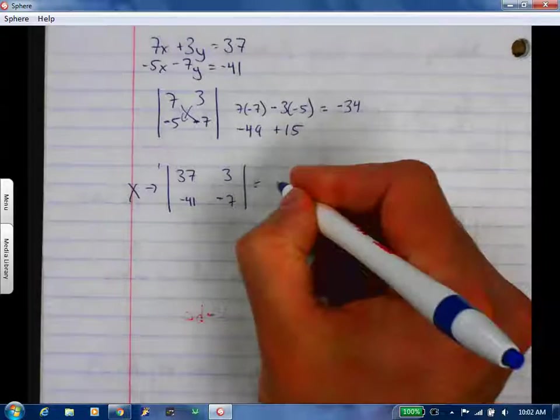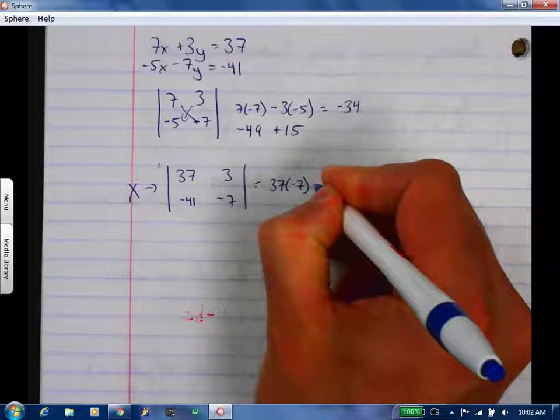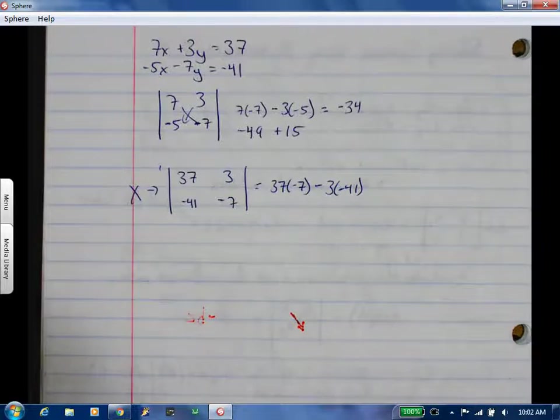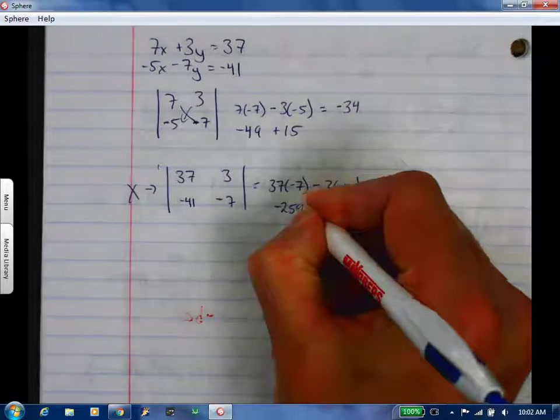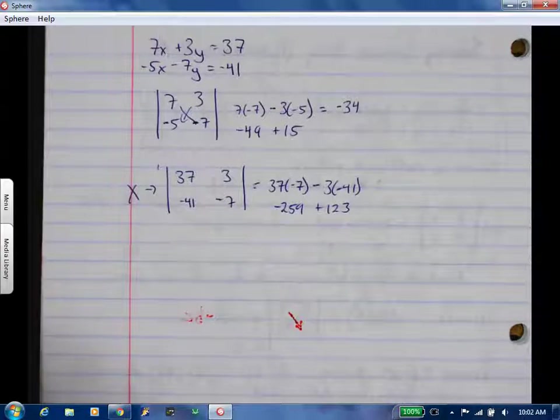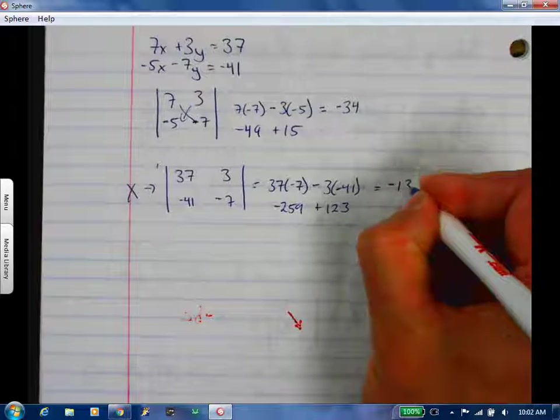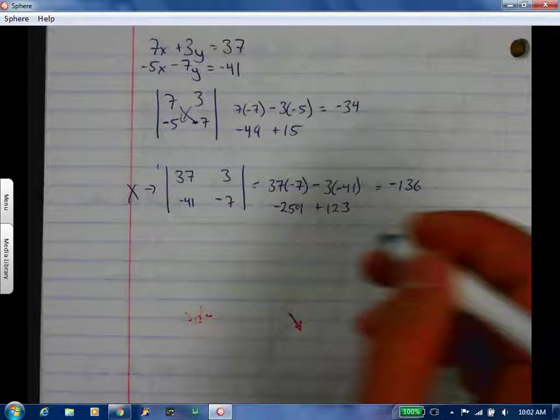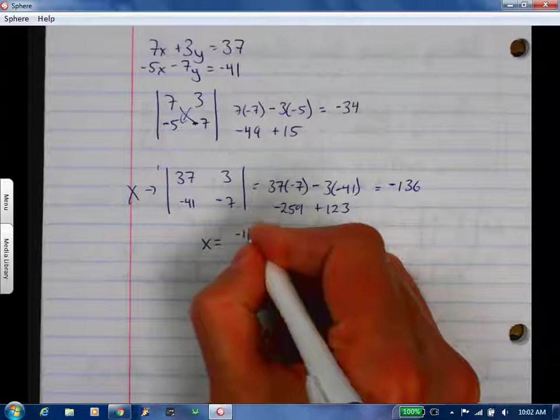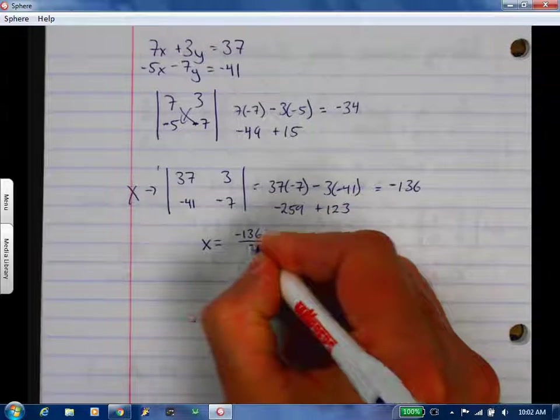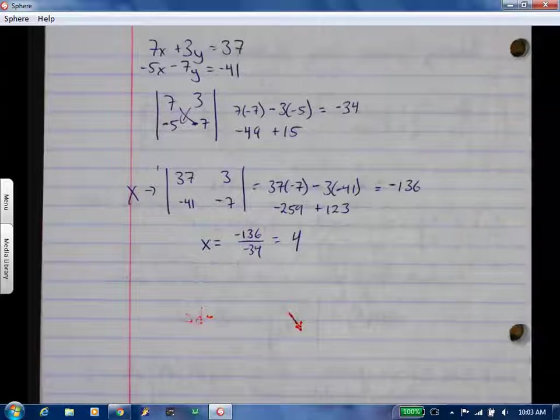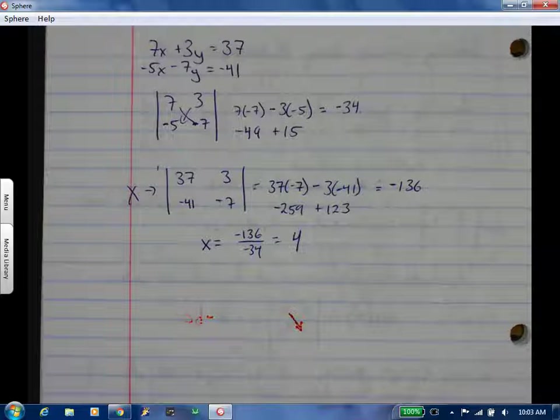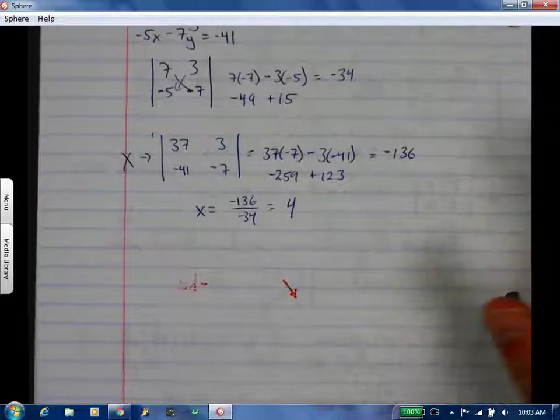So 37 times negative 7 minus 3 times negative 41. If you get quick with this, it's just as easy to do another matrix as it is to plug it in. Either way.